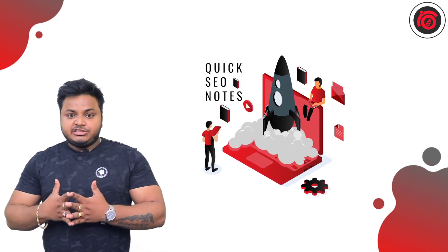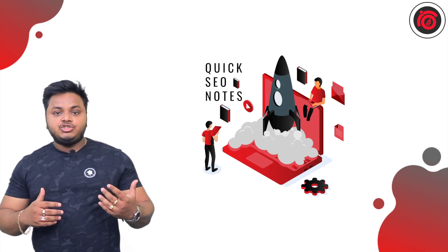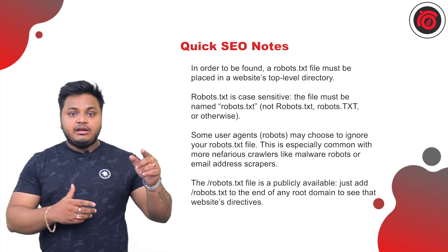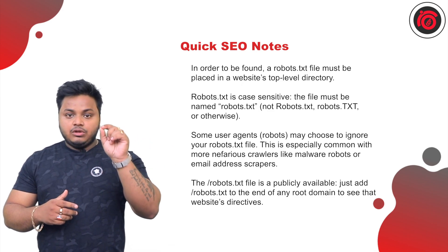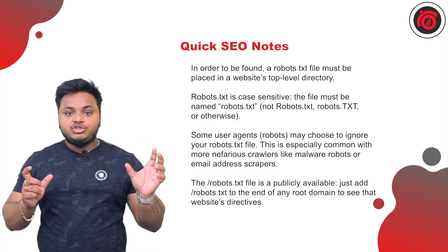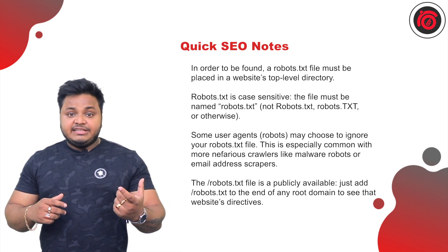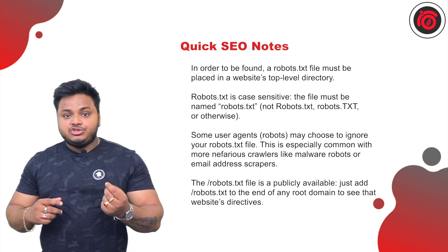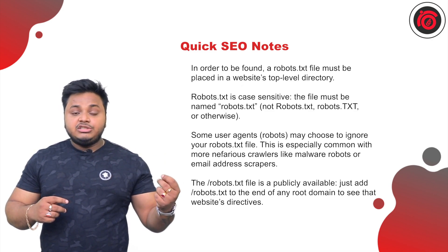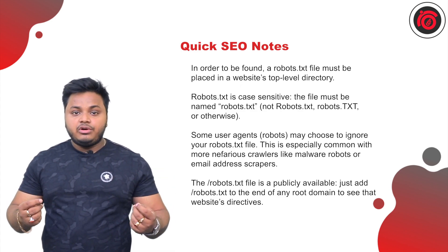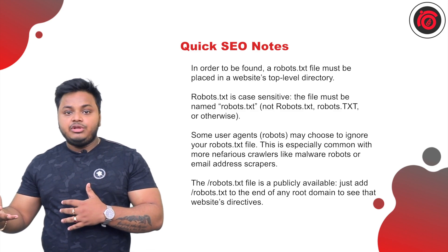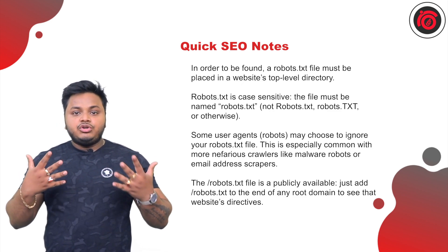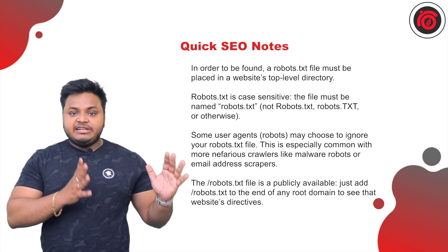A few quick SEO tips. First, robots.txt should be publicly available and not hidden, because crawlers need to find it. The protocol should be: website-name/robots.txt. Second, it is case-sensitive, so it must be written as 'robots.txt' only — no errors or typos. Third, robots.txt should be placed in the public HTML or root folder so that crawlers can easily navigate to it.